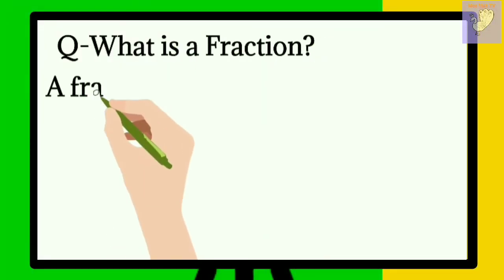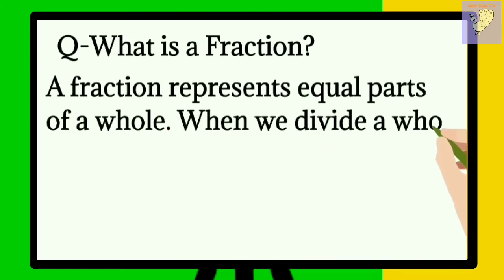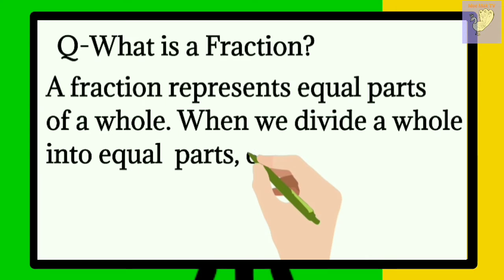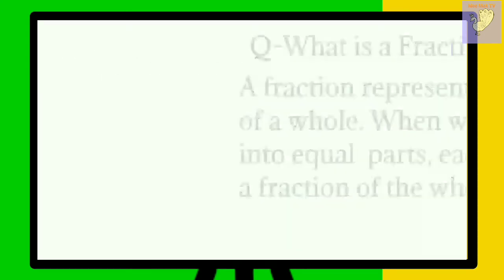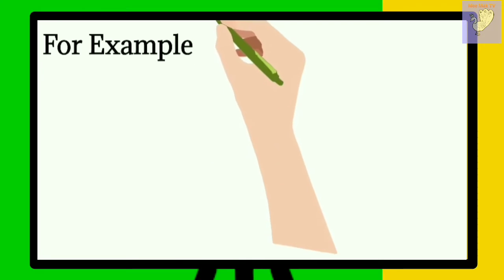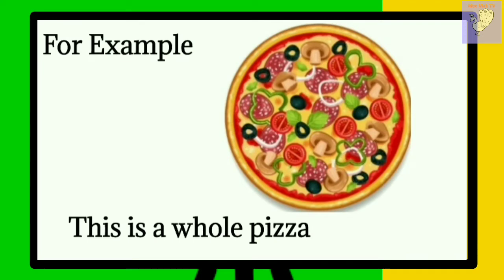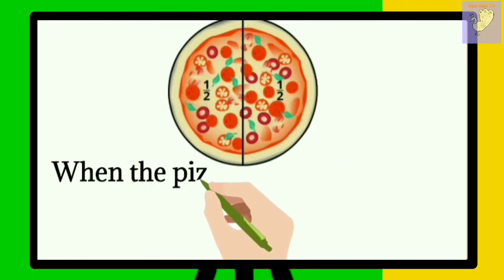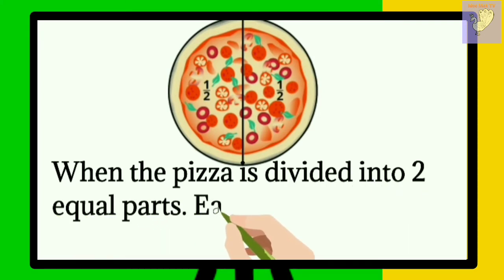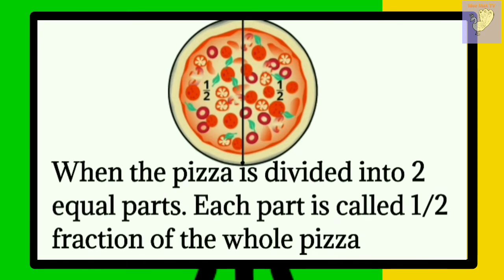What is a fraction? A fraction represents equal parts of a whole. When we divide a whole into equal parts, each part is a fraction of the whole. For example, let's take a pizza as a whole. When the pizza is divided into two equal parts, each part is called one half fraction of the whole pizza.